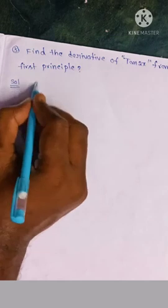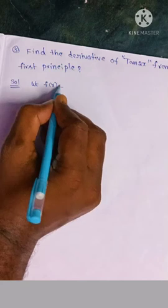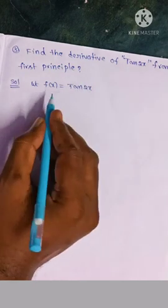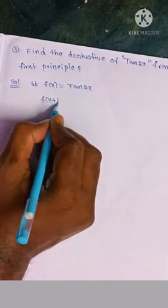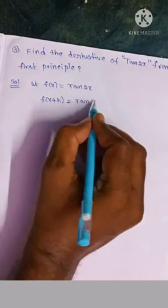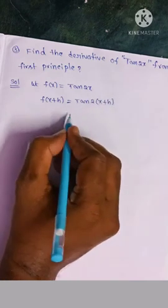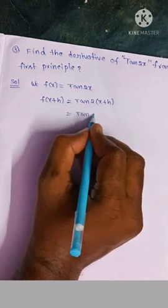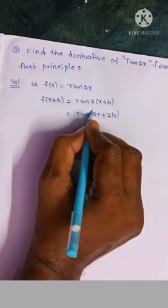Procedure: let f of x is equal to tan 2x. That means f of x plus h — x in a place lo manu x plus h in a term place lo put cheste — that means 2 into x plus h is equal to tan 2x plus 2h.